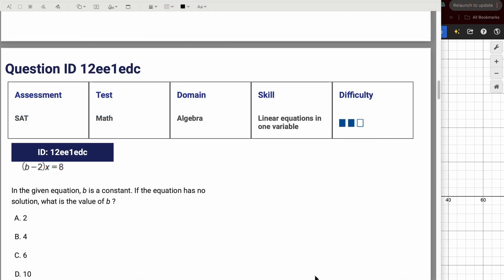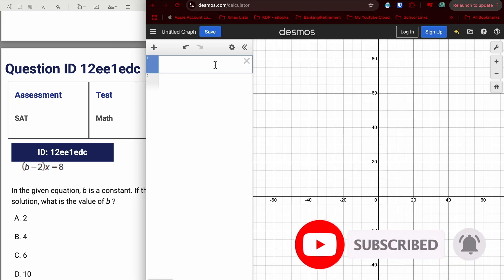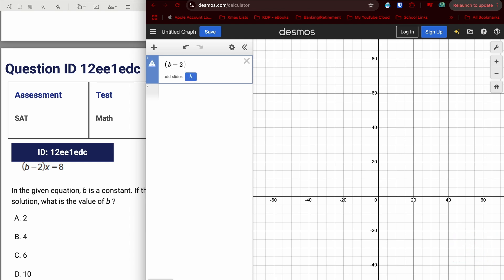So not only does Desmos allow you to graph and find the solution to equations very quickly, it also allows you just to do basic arithmetic in there as well. This is another good question to use Desmos on because it's asking for if the equation has no solution. If you understand about graphing and your linear equations, if you end up with parallel lines, you have no solution because the two lines are not intersecting.